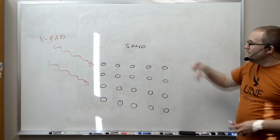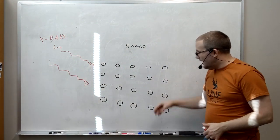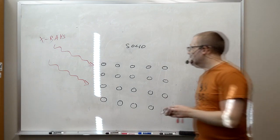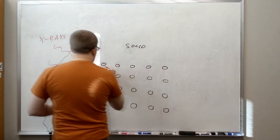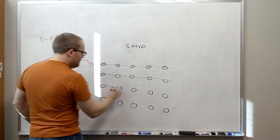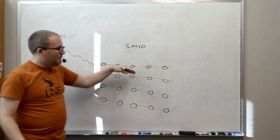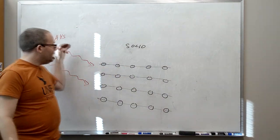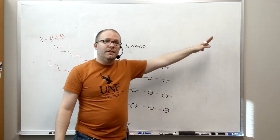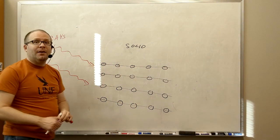The difference here is you want to think of these atoms as being arranged in different planes. So for example, imagine you connect the dots this way and make these planes of atoms here. The X-rays are going to come in, they're going to interact with the atoms, and based on the angle they come in with respect to those planes, they're going to reflect off at the same angle coming out.